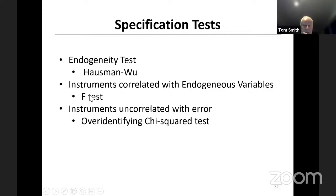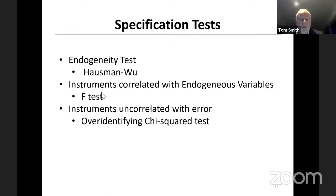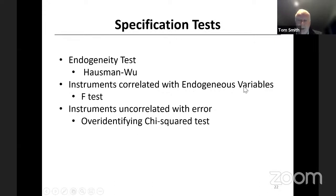The next two specification tests examine whether you've got good instruments. Two things you want to check: Is the instrument associated with the endogenous variable? That is, you want the instrument to be correlated with the thing you're measuring that you consider as endogenous. And are the instruments uncorrelated with the error? Those are the two conditions: instrument uncorrelated with the error, but the instrument is correlated with the endogenous variable.